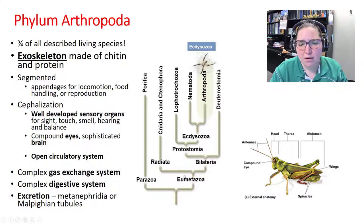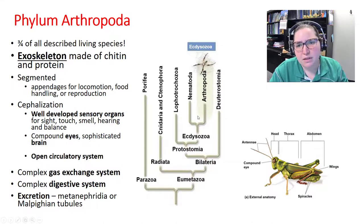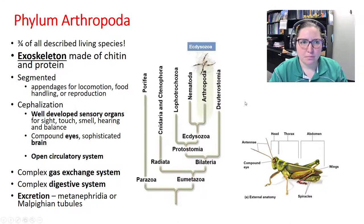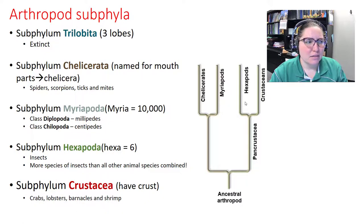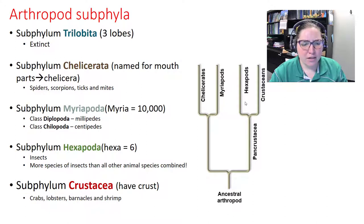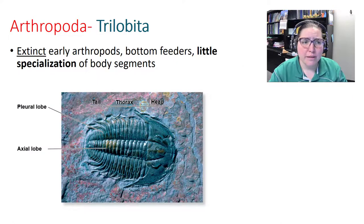Within Eumetazoa — bilateral, protostomes — arthropods fall under Ecdysozoa. Arthropod subphyla include trilobites, chelicerata, myriapoda, hexapoda, and crustacea. Trilobites are extinct early arthropods with three distinct body segments.